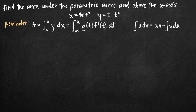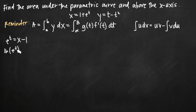In order to solve x equals 1 plus e to the t for t, the first thing we'll do is subtract 1 from both sides to get e to the t equals x minus 1. Now to solve this for t we'll take the natural log of both sides, and natural log and e to the t cancel on the left, leaving us with t equals natural log of x minus 1.